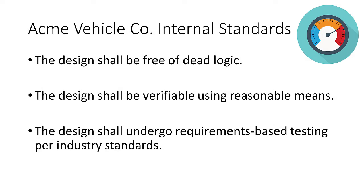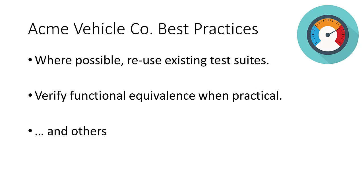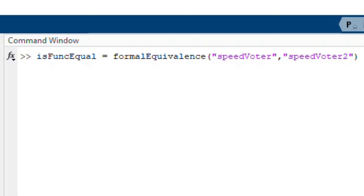I still need to perform requirements-based testing to ensure the design correctly implements the requirement. I can save additional time and budget by reusing the test suite from the legacy vehicle program on the new design. Before doing so, I can use Formal Functional Equivalence to prove that the new design is equivalent to the design from the legacy vehicle program. I can use the function formal_equivalence with the names of the two models as arguments.